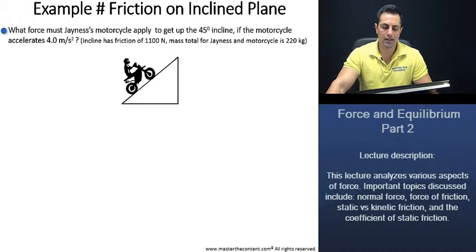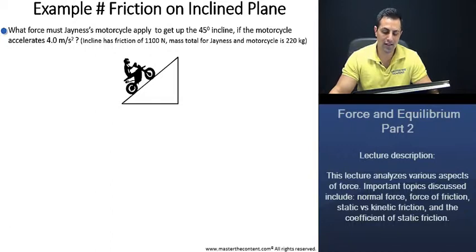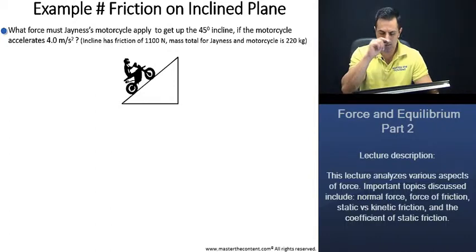Your career, our passion. Example: friction on incline plane. What force must Janus' motorcycle apply to get up the 45 degree incline if the motorcycle accelerates 4 meters per second squared? Incline has friction of 1,100 newtons. Mass total for Janus and motorcycle is 220 kilograms.